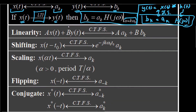The linearity property states that x(t) added with y(t) — where x(t) has Fourier series coefficients ak and y(t) has coefficients bk — the continuous time Fourier series is linear with respect to the transformation. Capital A and capital B are constant coefficients respectively, so the combined signal A·x(t) + B·y(t) has coefficients A·ak + B·bk.